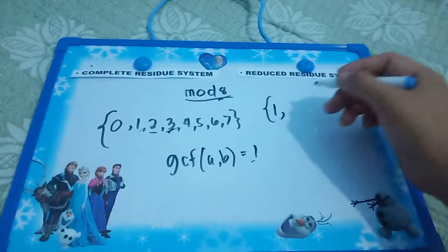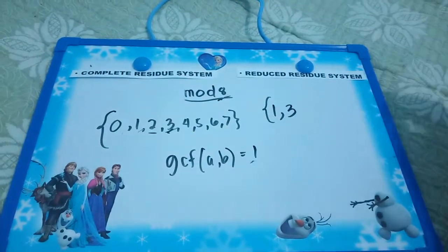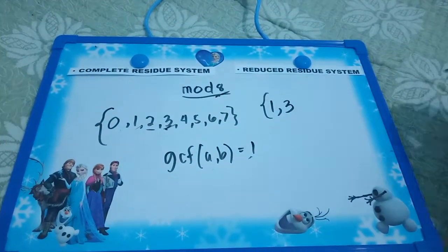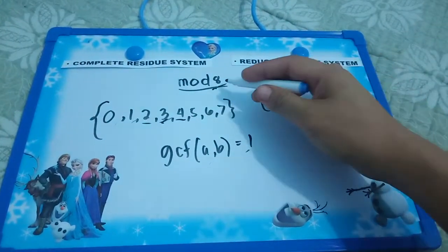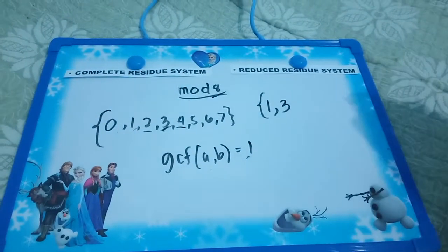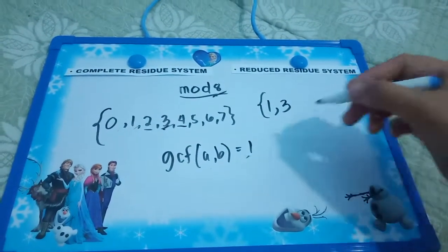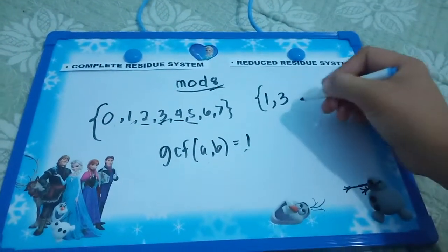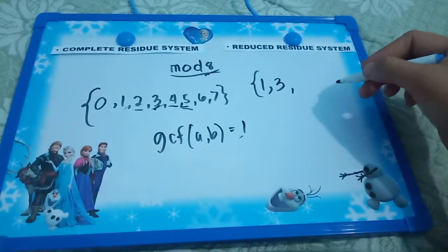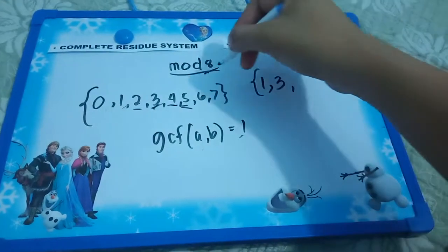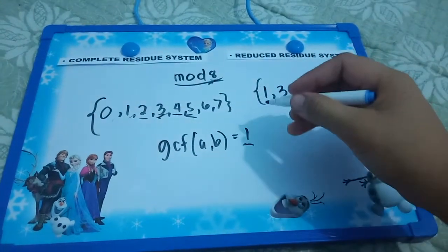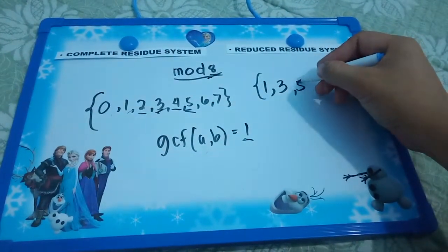3 is also a totative or relatively prime lesser than 8. How about 4? No, because they are not relatively prime because their GCF is 4. But 5, yes, that is relatively prime. Since 5 is also a prime number and since 8 is an even number and a composite, their GCF is 1. So, 5.